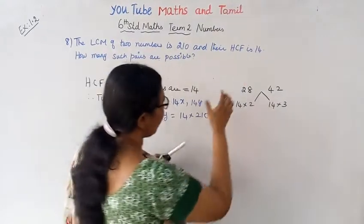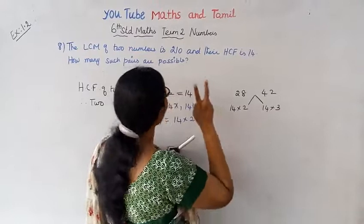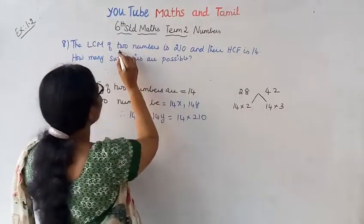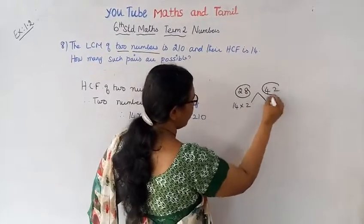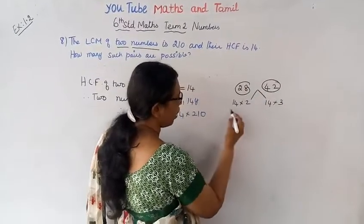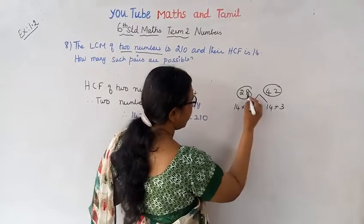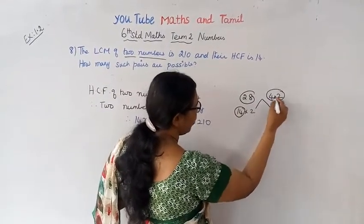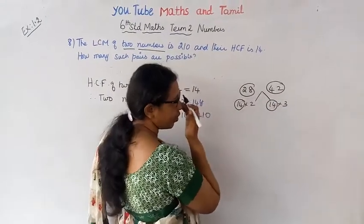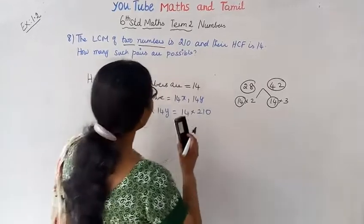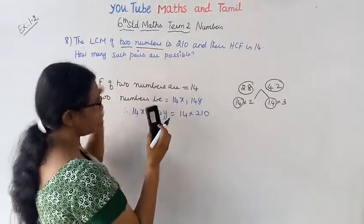For example, 14 is related. Consider 2 numbers: 28 and 42. 28 is related to 14 — 28 is 14 times 2, and 42 is 14 times 3. So 28 and 42 are both multiples of 14. How many such pairs are possible?